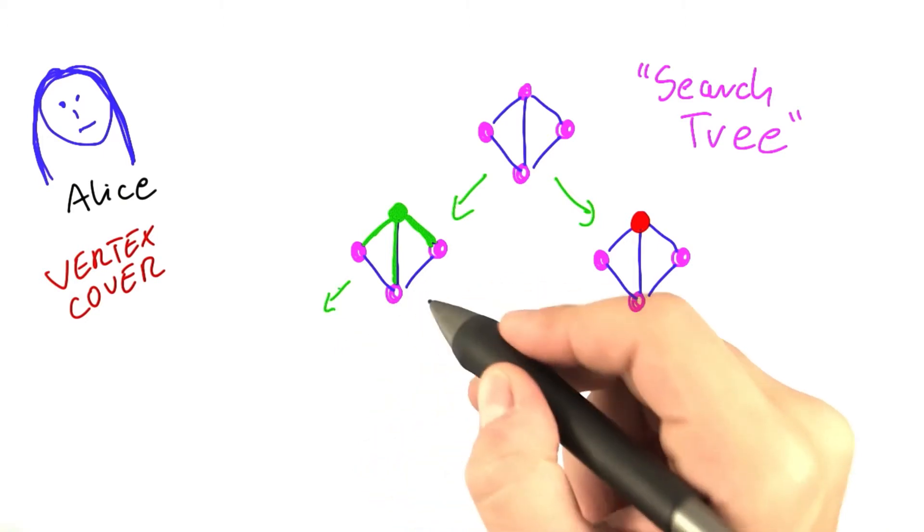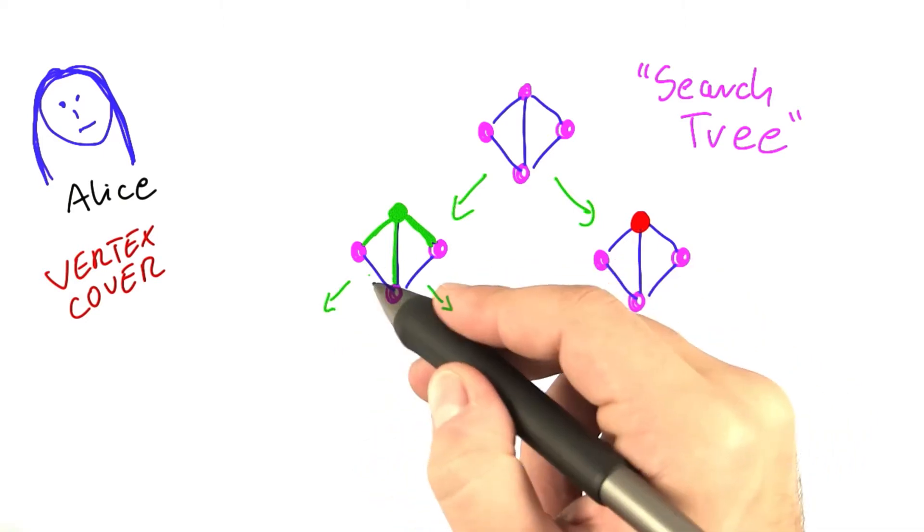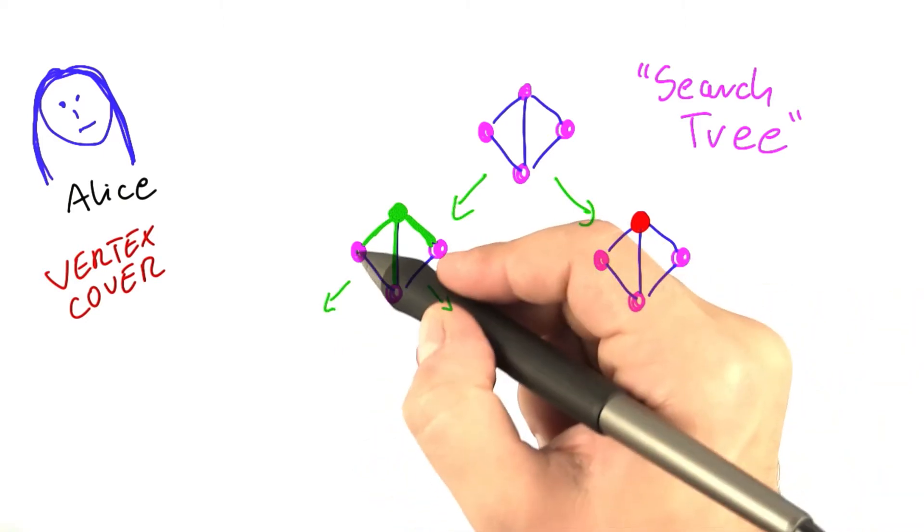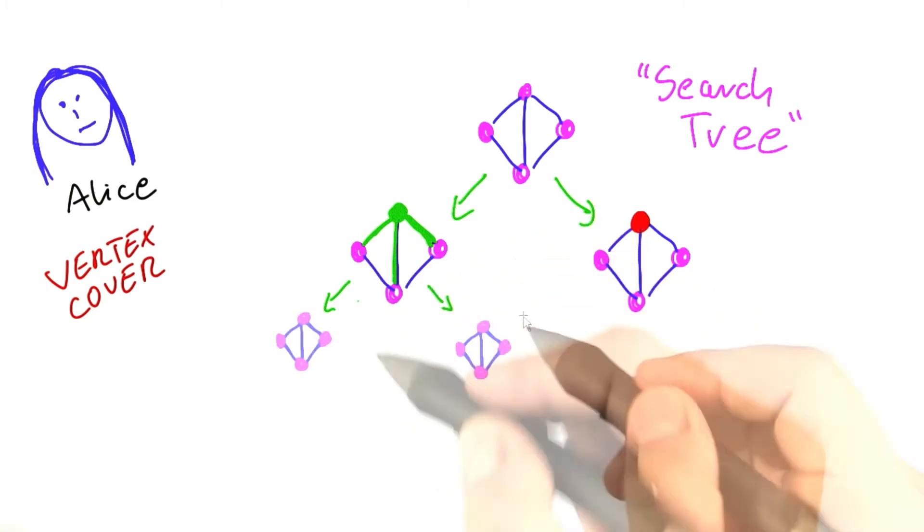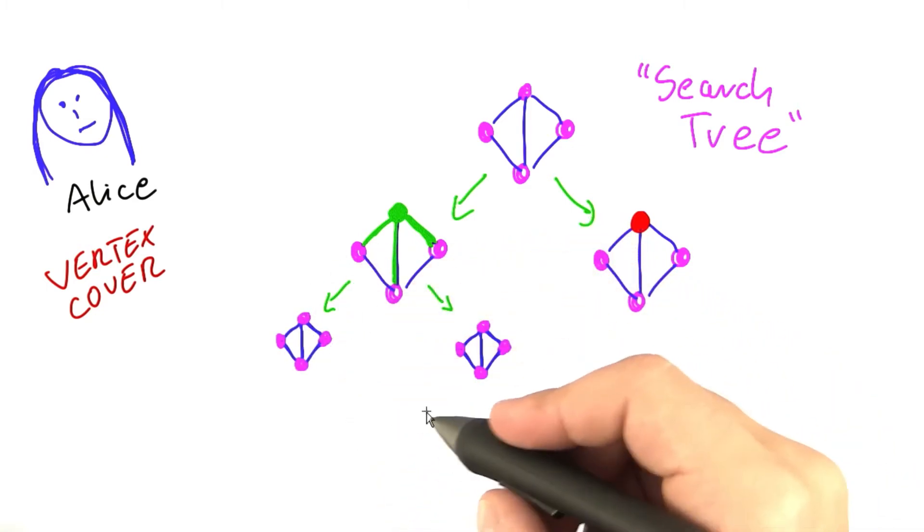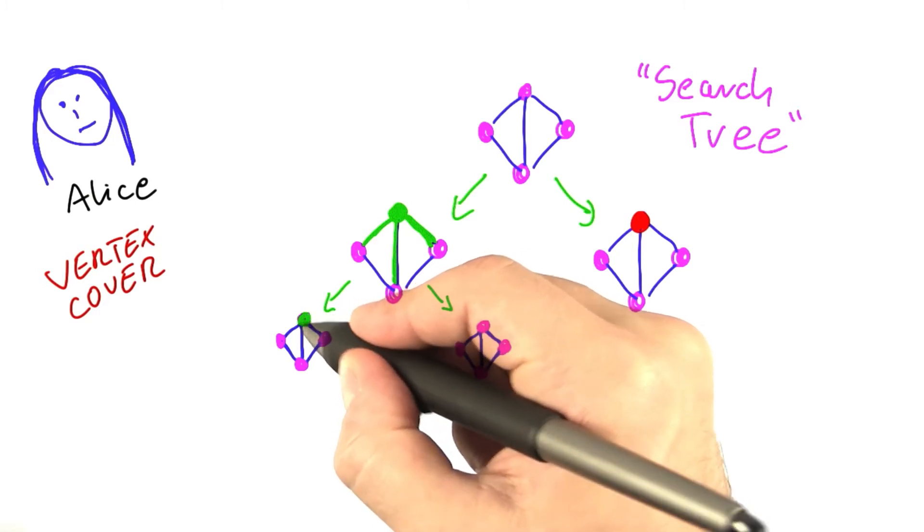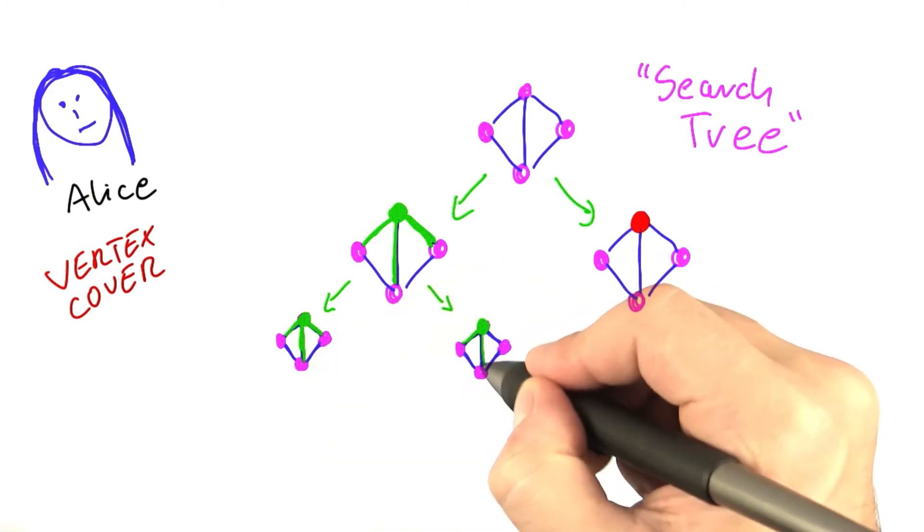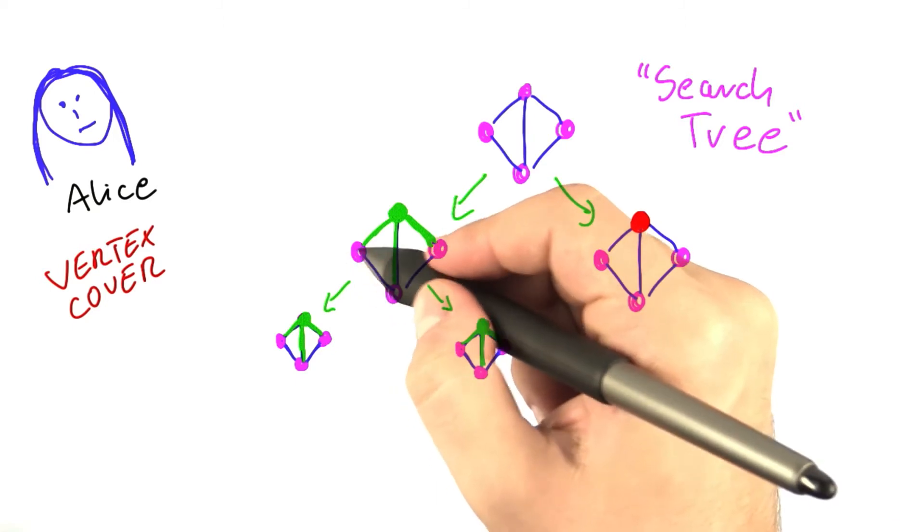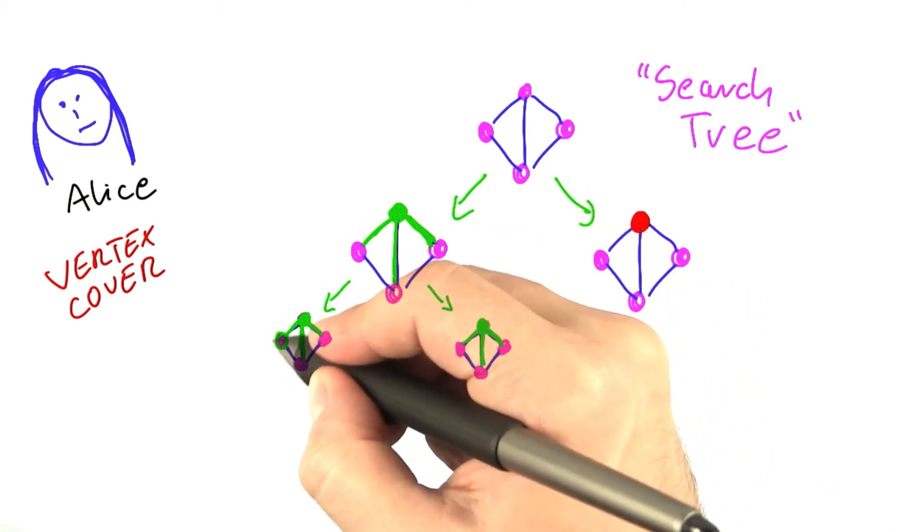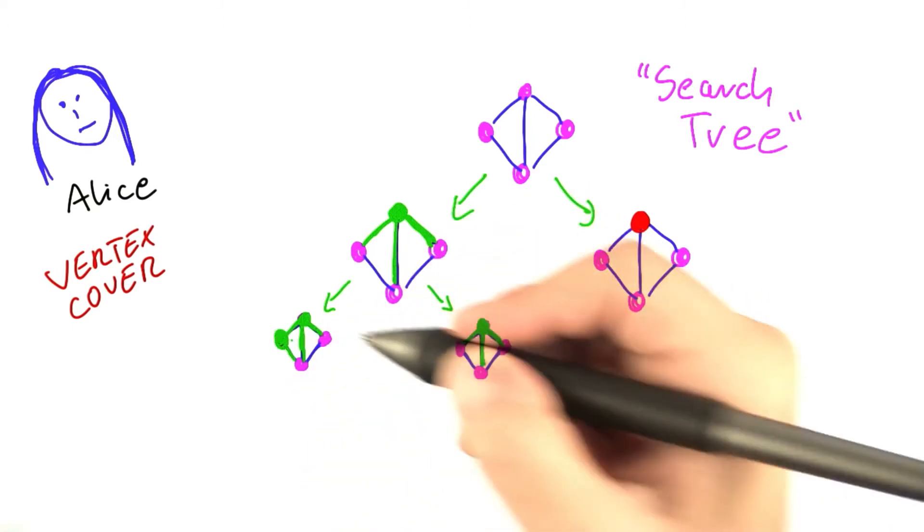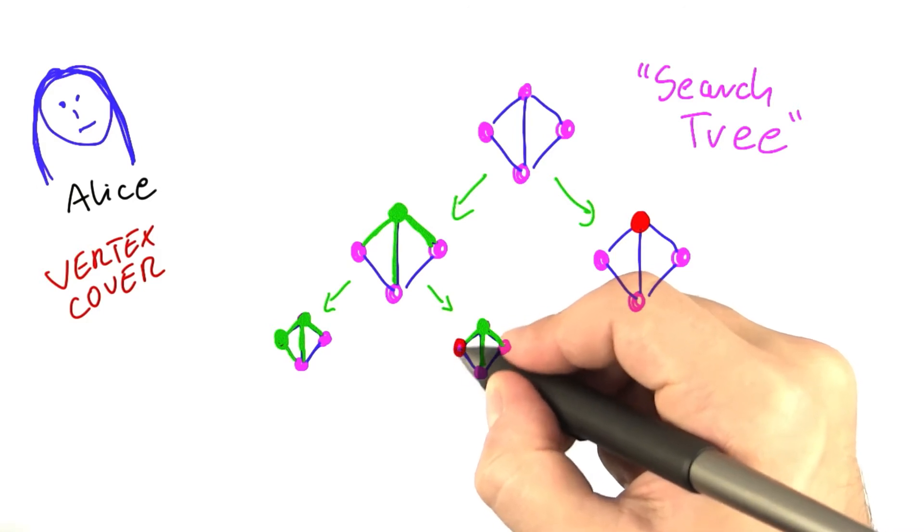And then you're going to split down further, so on this side here and on this side here. So let's look at this vertex here next. We're just going to draw it a little bit smaller so that we don't run out of space. We already know that this vertex here is in the vertex cover, and we're now deciding for this vertex here on the left. So we'll have one case where we do put it into the vertex cover, and another one where we don't.